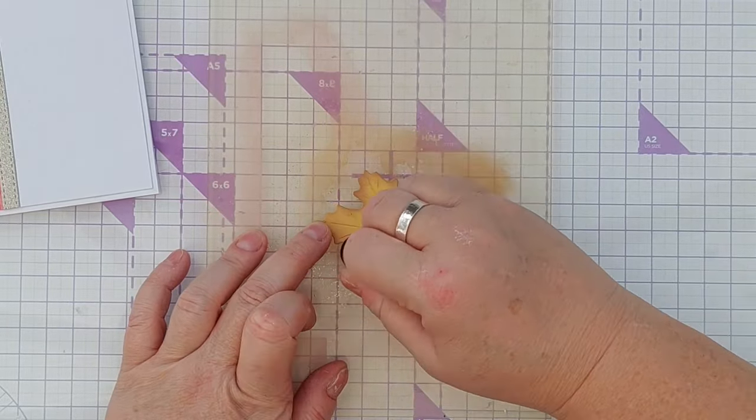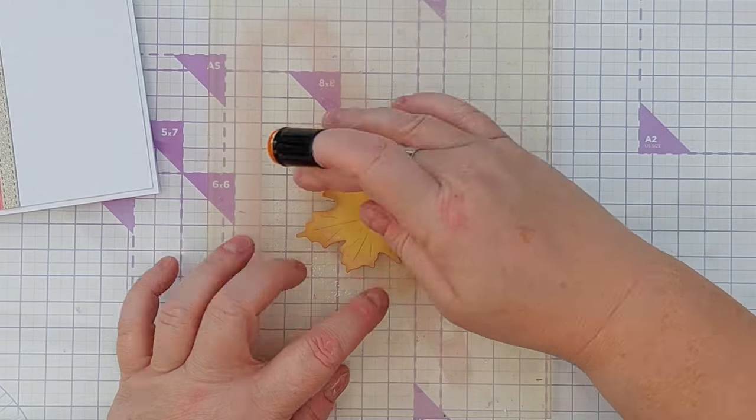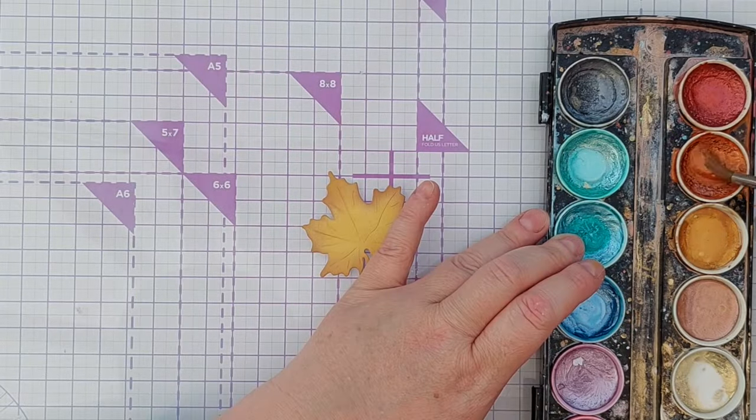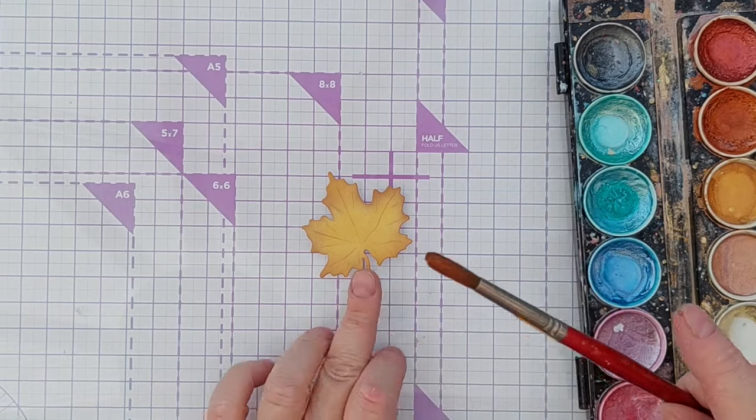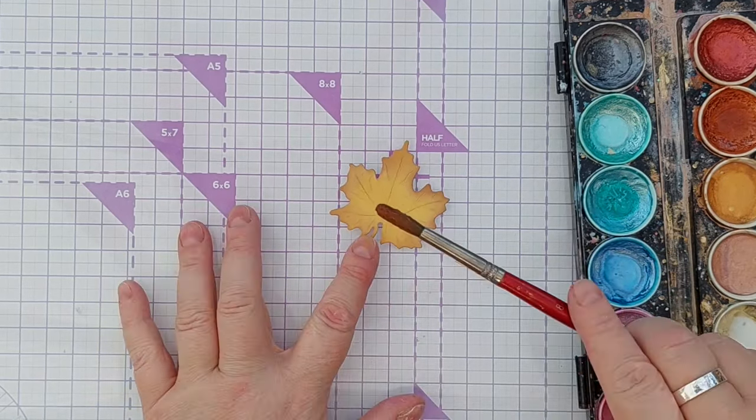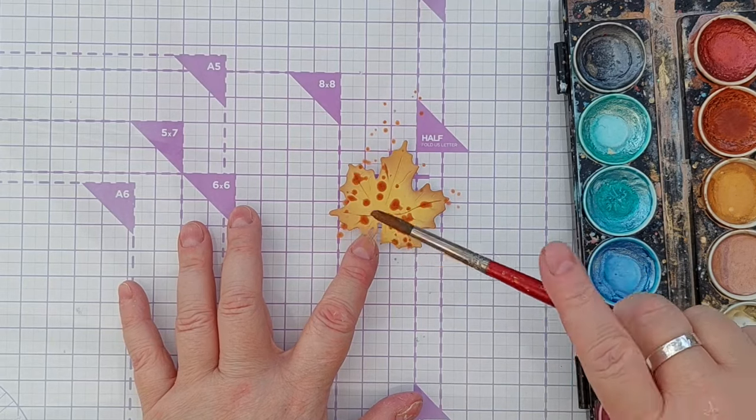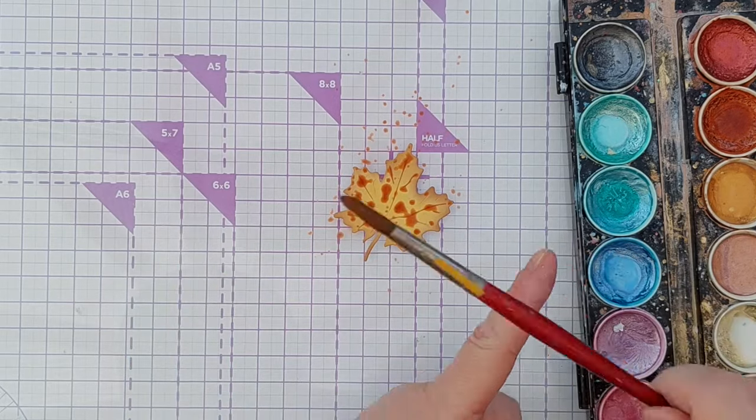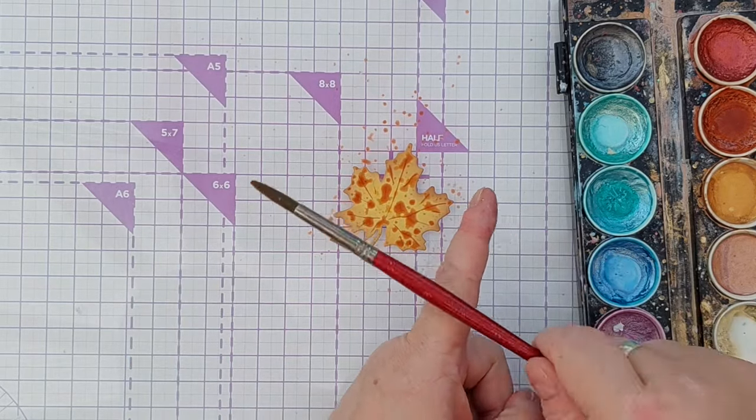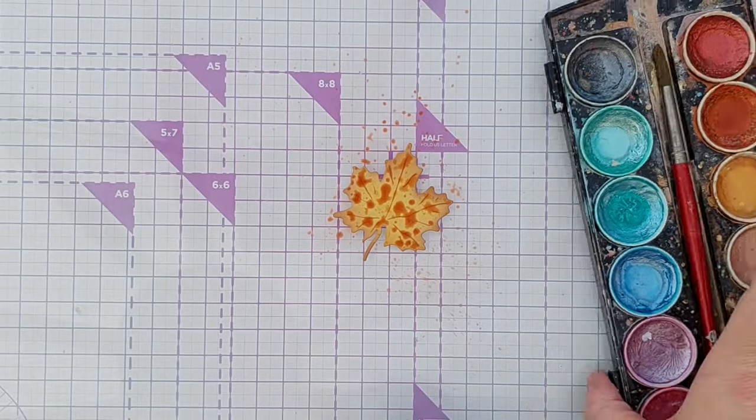And to add shimmer and shine to my leaf and to bring in some more autumn colors, I used copper metallic paint and spattered that on. Not only does this bring in the shimmer, shine, and autumn colors, the paint runs in the embossed veins on the die cut and fills them up, so it really brings those out.